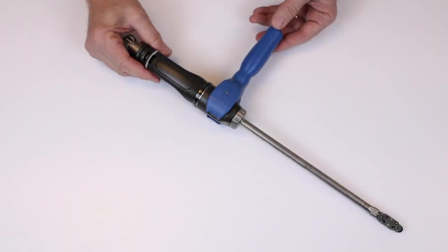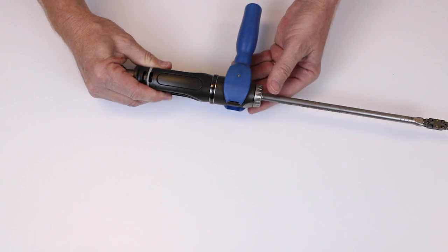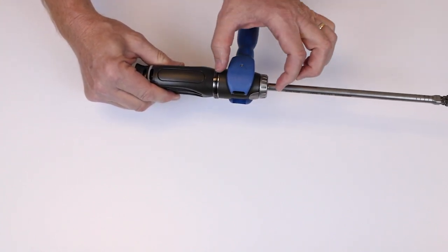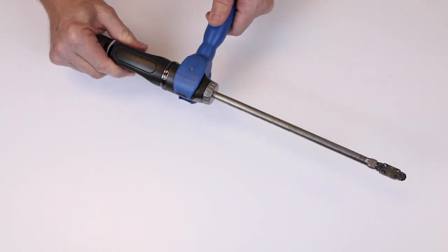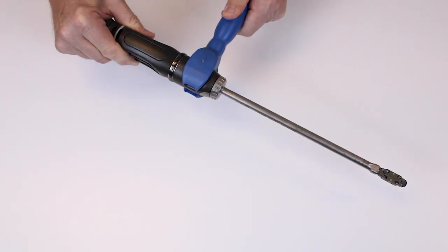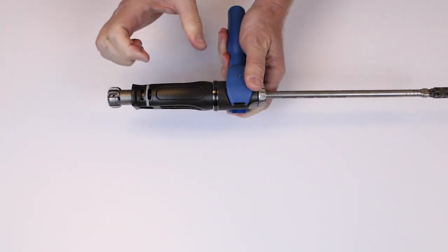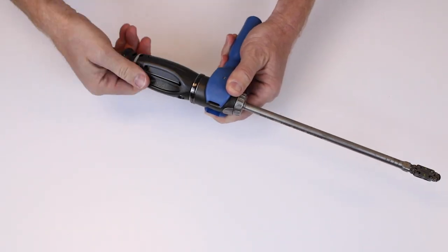It's important to note that there are two sections of the handle. This section controls the rotation of the implant. This section controls the expansion of the implant.